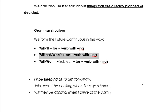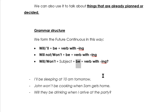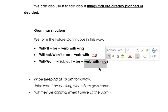For the negative, we use will not or won't plus be plus the verb with -ing. And for questions, like the future perfect, there is an inversion between the subject and the modal verb will or won't. We place will or won't at the very beginning, followed by the subject plus the verb to be in the infinitive, always in the infinitive, plus the verb with -ing.